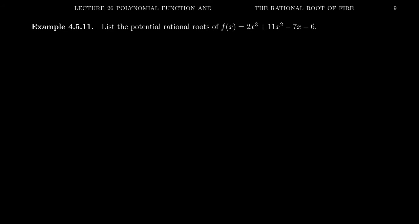This theorem is best illustrated via an example. Take the polynomial f(x) = 2x³ + 11x² − 7x − 6. If we look at the constant term, that's −6. This gives us all of our possible p's. So p could be one of the factors of −6: you could get 1, 2, 3, and 6. Those are the factors of 6.